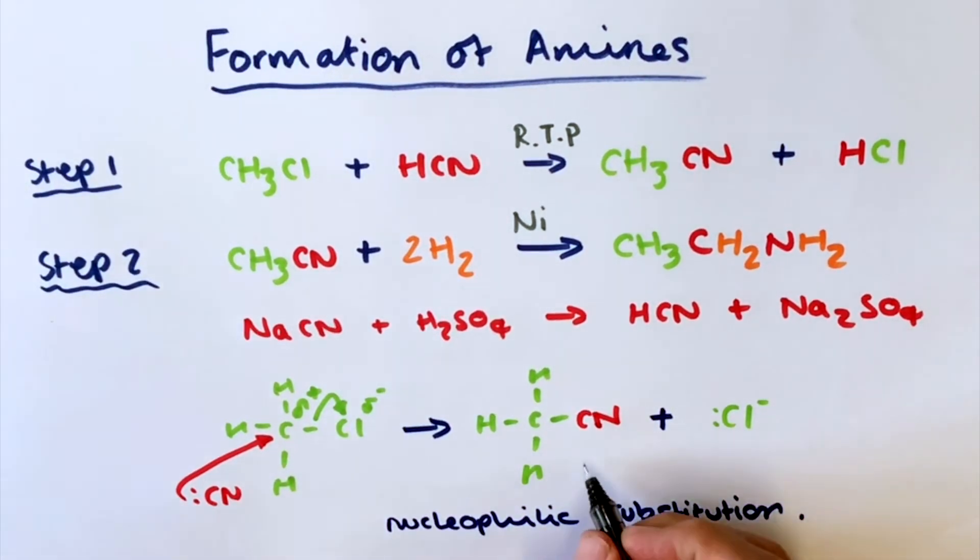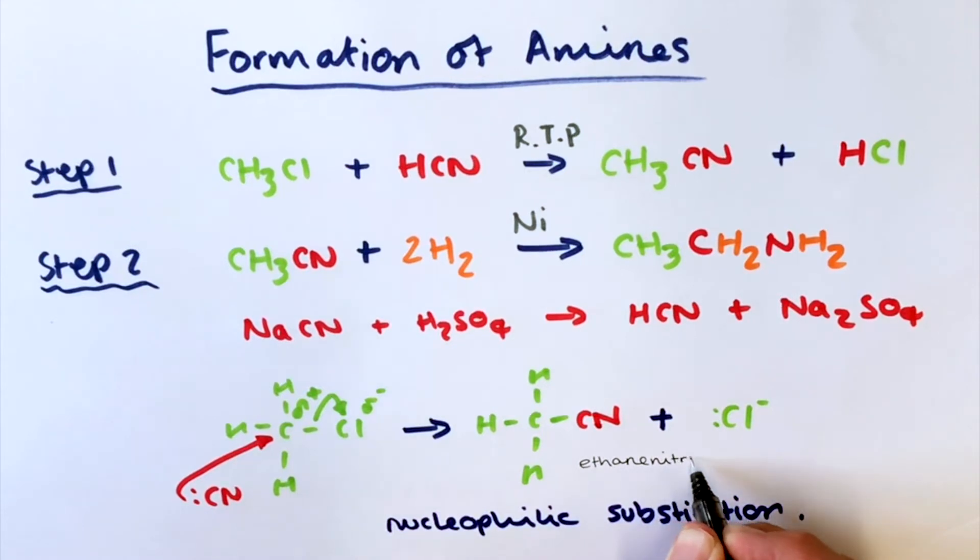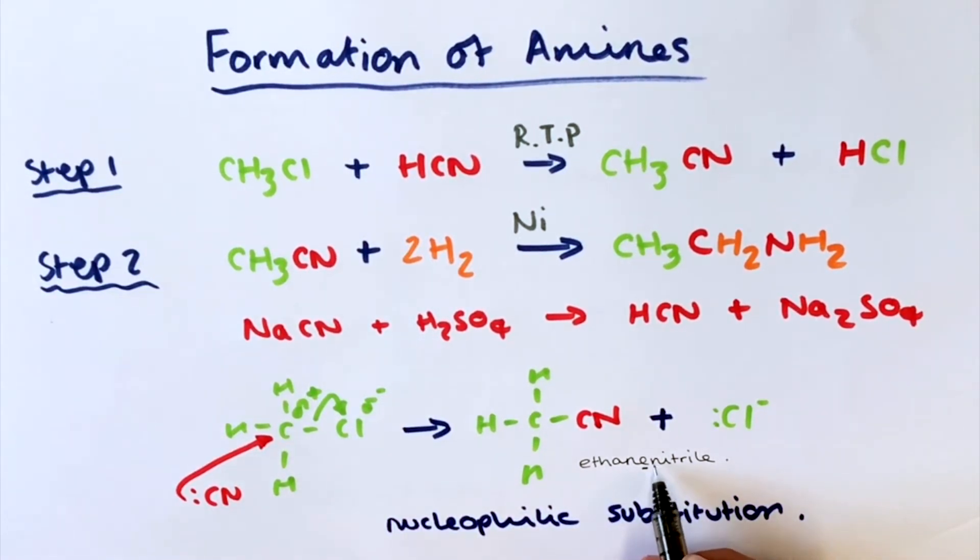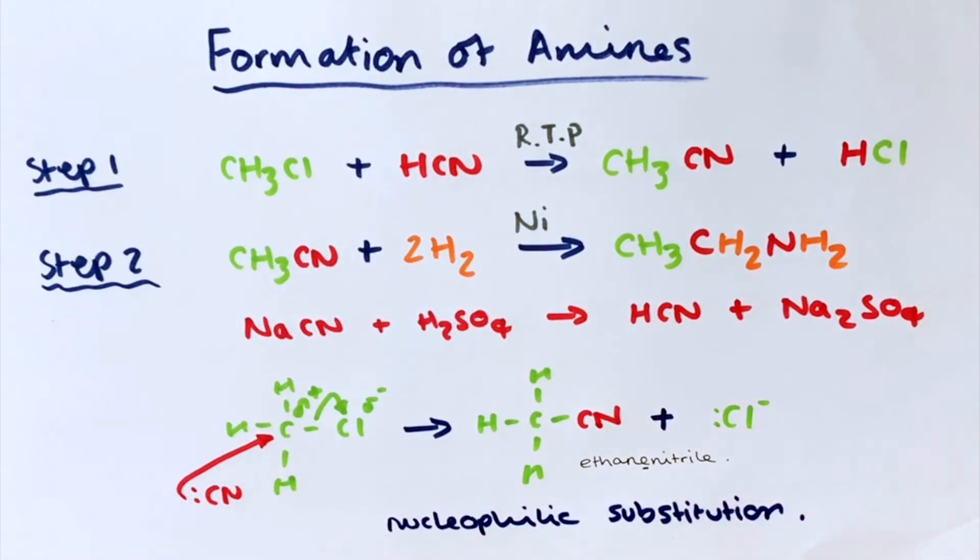Just to double check on the naming here, so ethane nitrile. Remembering to keep the E in the name for the ethane, for the two carbons, because the functional group here doesn't begin with a vowel, it begins with an N, so we keep the E left over.